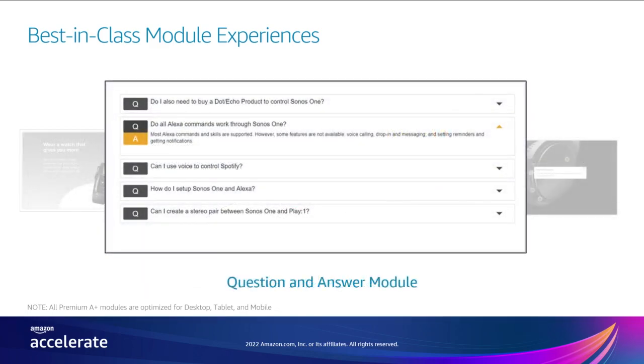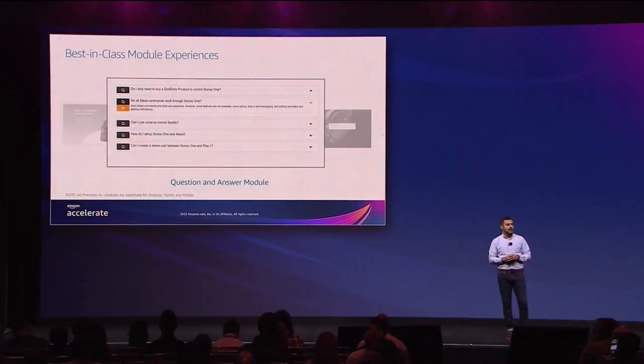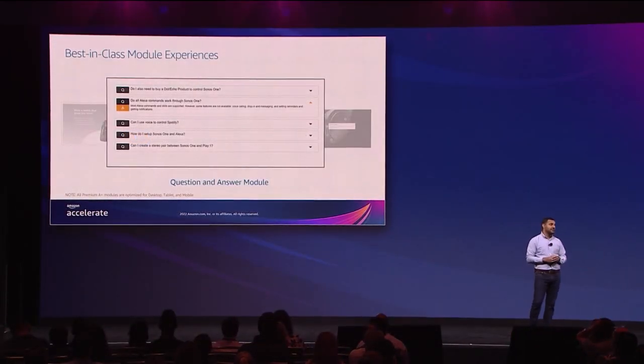Q&A is yet another powerful module included in premium A-plus. Unanswered questions can keep customers from buying your product and hurt your sales. The Q&A module is a great tool to address that by proactively answering the most frequently asked questions, helping customers overcome purchase barriers and improving conversions. A well-thought-out Q&A module shows that you care about your customers' needs and helps build trust with them. By addressing key questions up front, you also reduce the likelihood of returns. You can also get creative with Q&A to educate customers on different uses of your product, increasing their satisfaction and potentially leading to positive reviews and ratings.